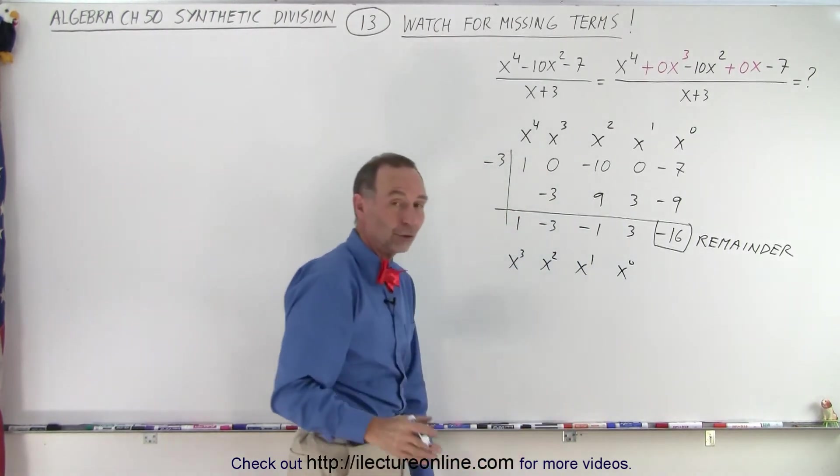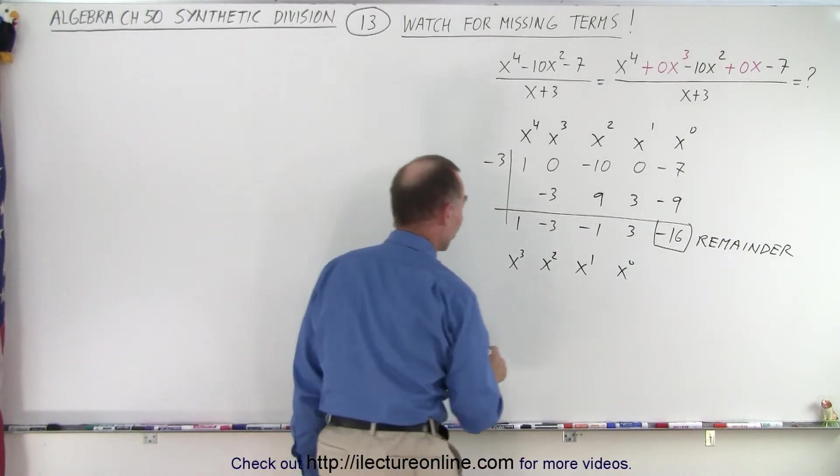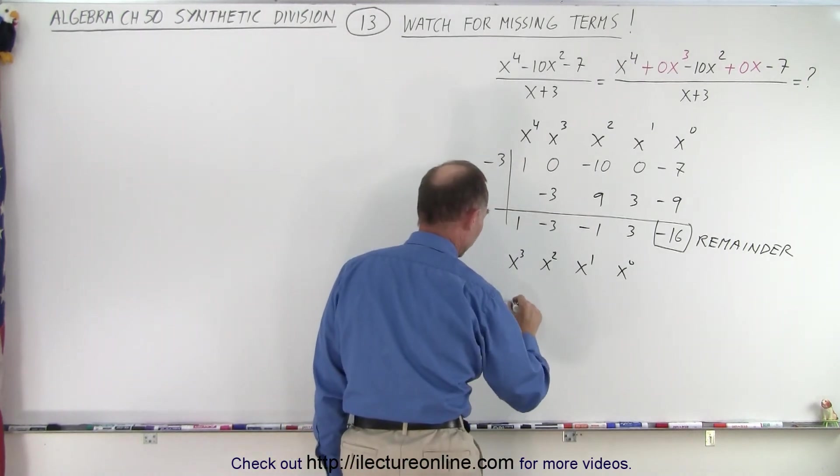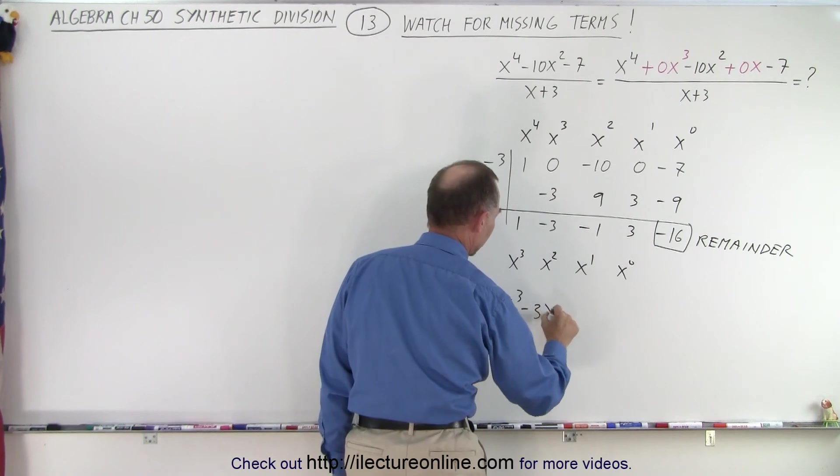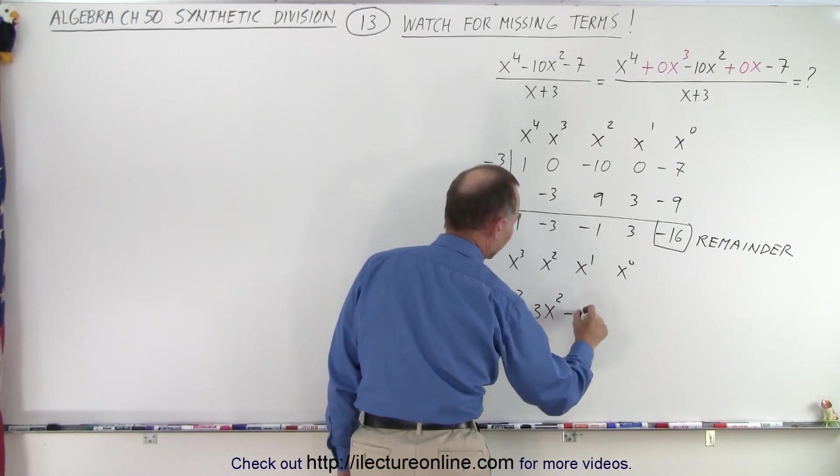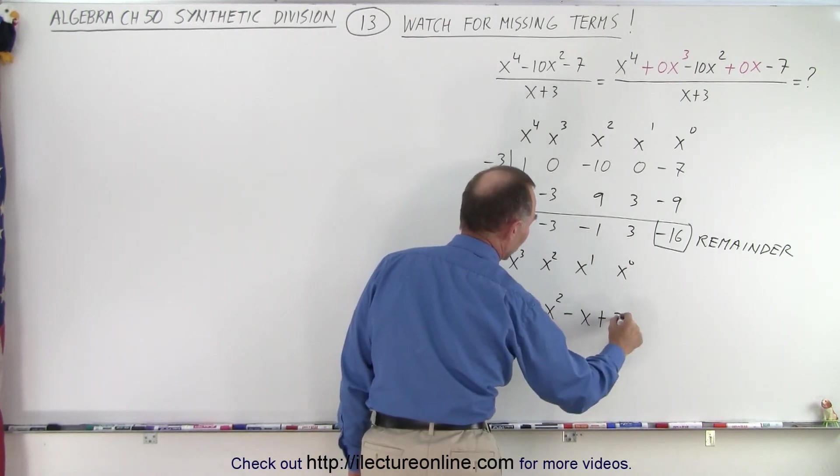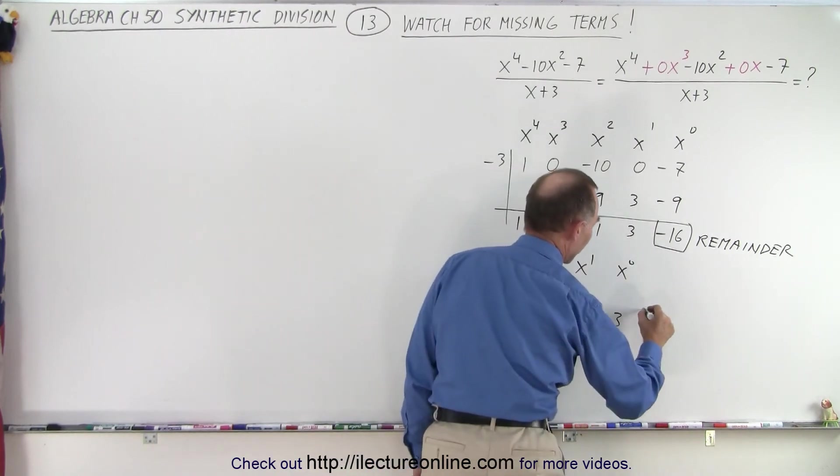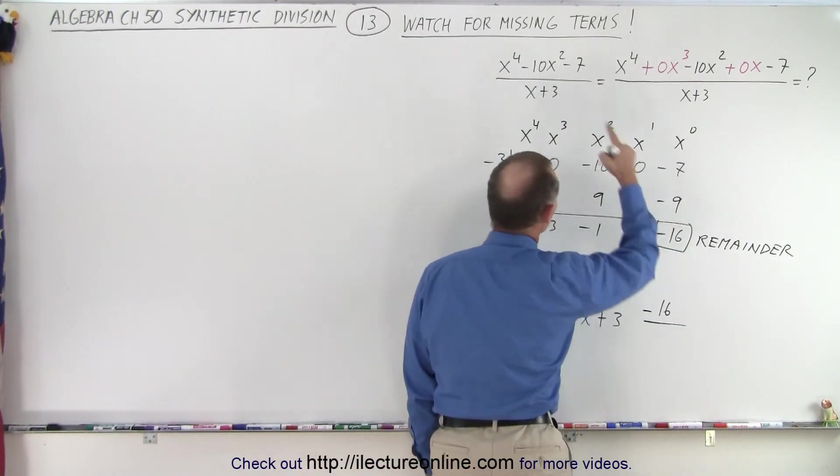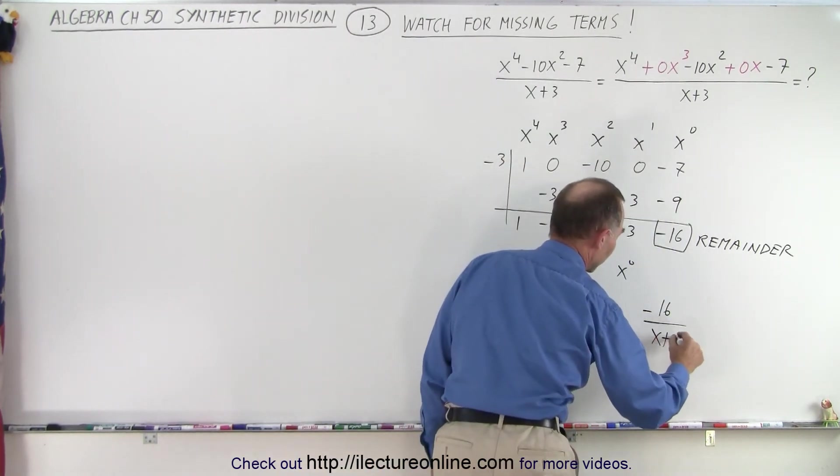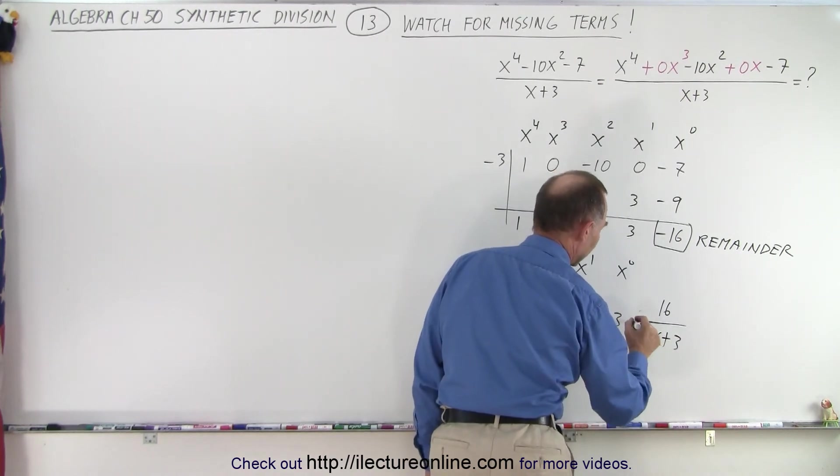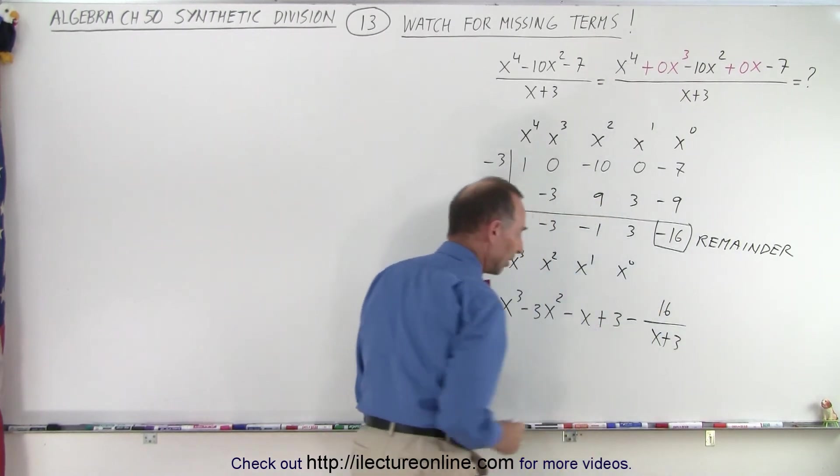And we have a remainder. So the solution to that division is as follows. We have x cubed minus 3x squared minus x plus 3 with a remainder of minus 16 divided by the divisor, which is x plus 3. And so maybe we'll put the negative over here because that makes it cleaner.